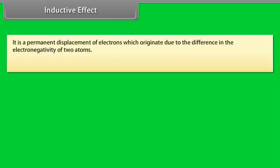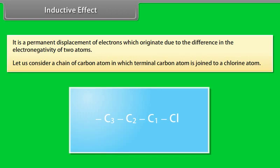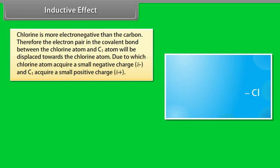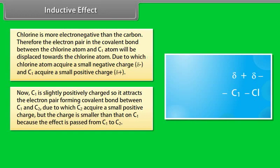Inductive effect is a permanent displacement of electrons which originates due to the difference in the electronegativity of two atoms. In a chain of carbon atoms where the terminal carbon is joined to a chlorine atom, chlorine is more electronegative than carbon. Therefore, the electron pair between chlorine and C1 is displaced towards chlorine, giving chlorine a small negative charge and C1 a small positive charge. C1 then attracts the electron pair between C1 and C2.